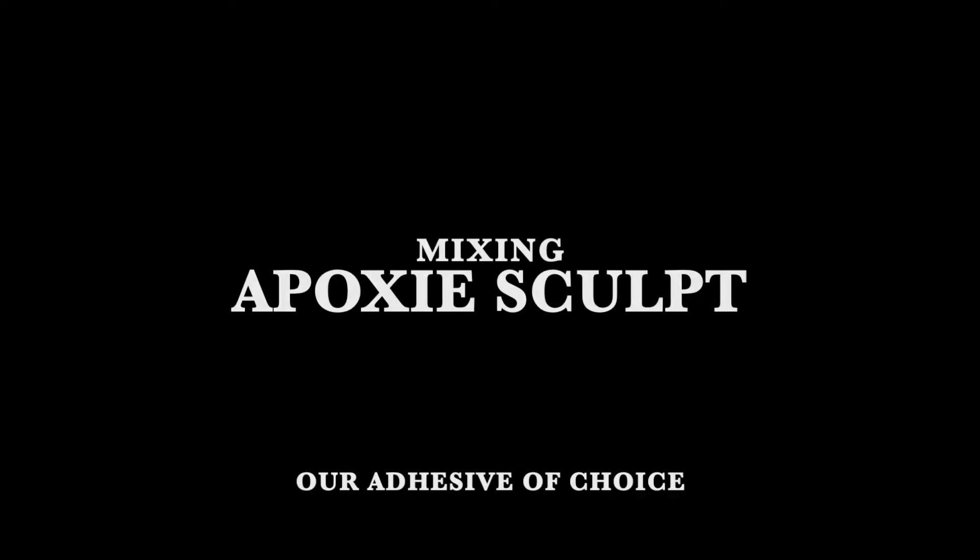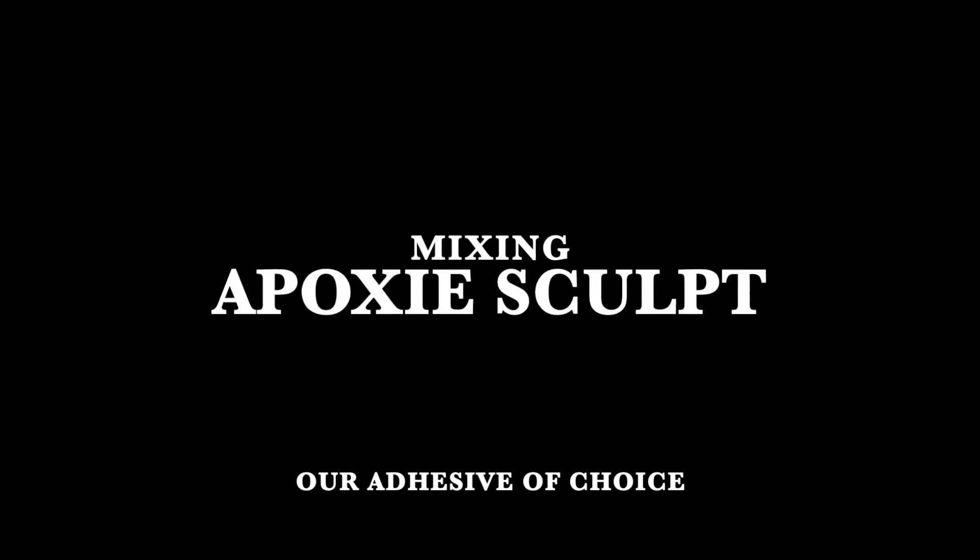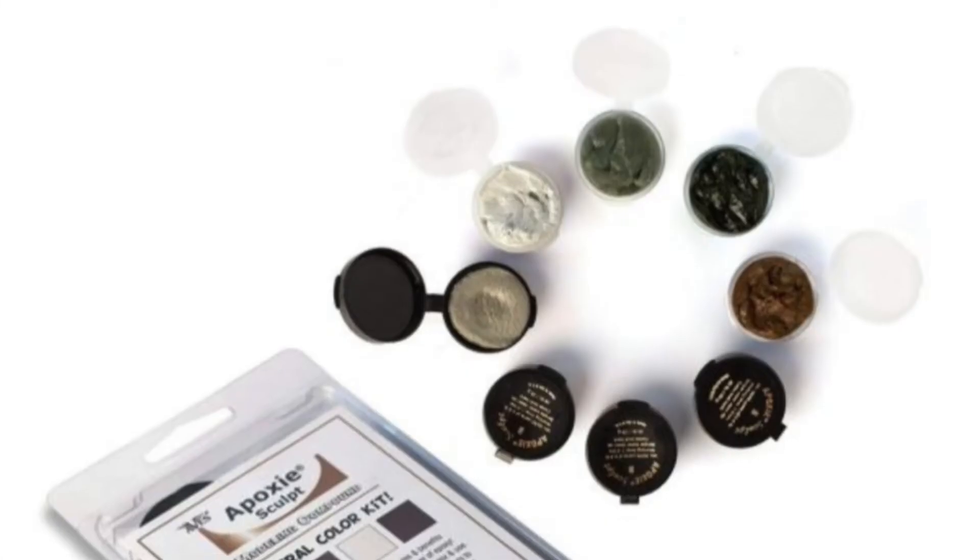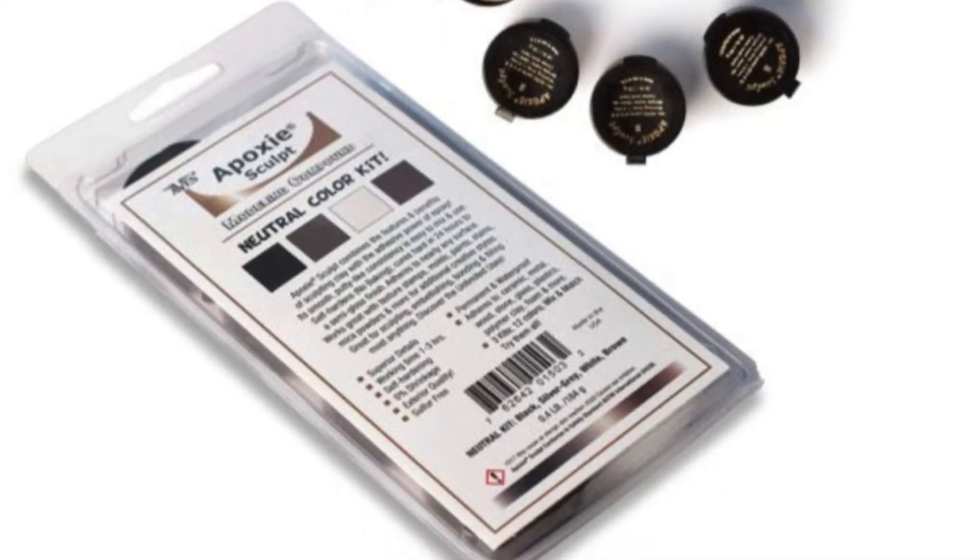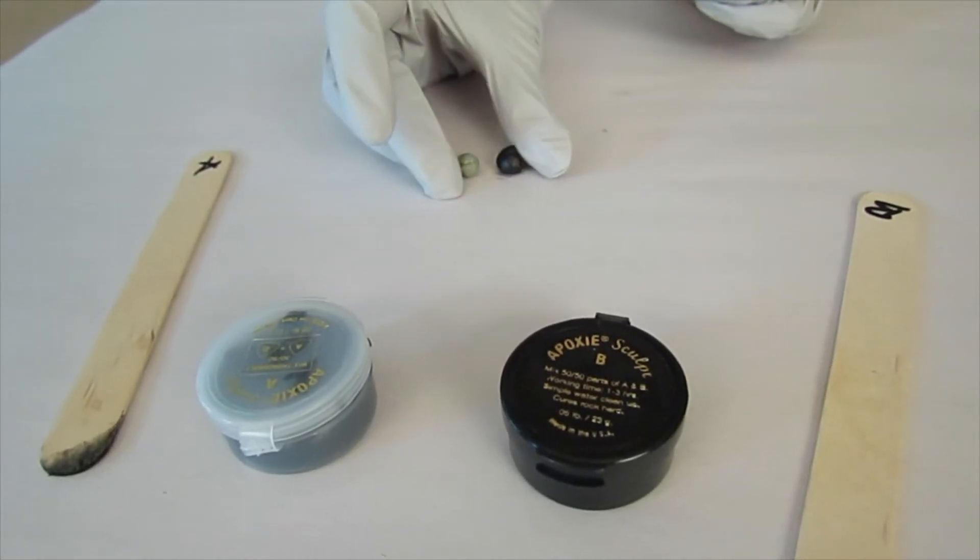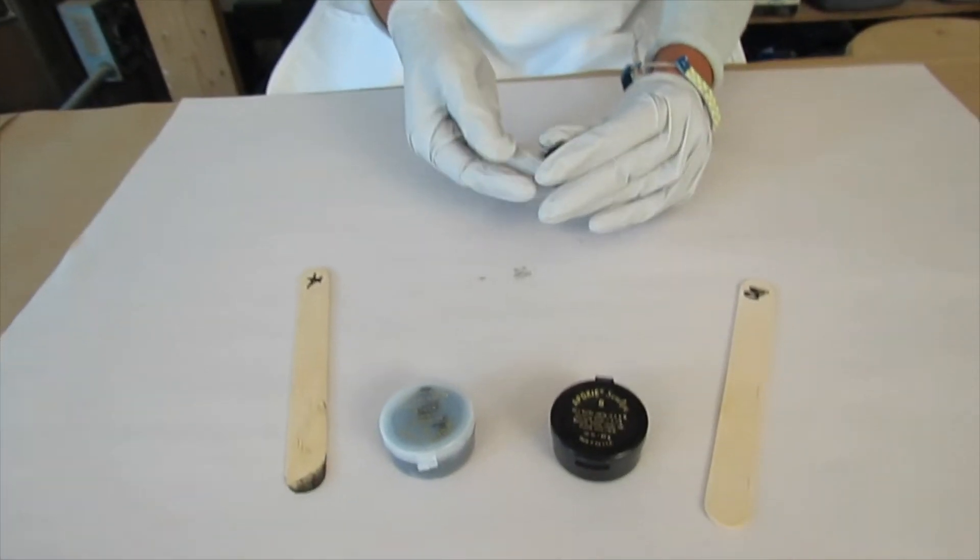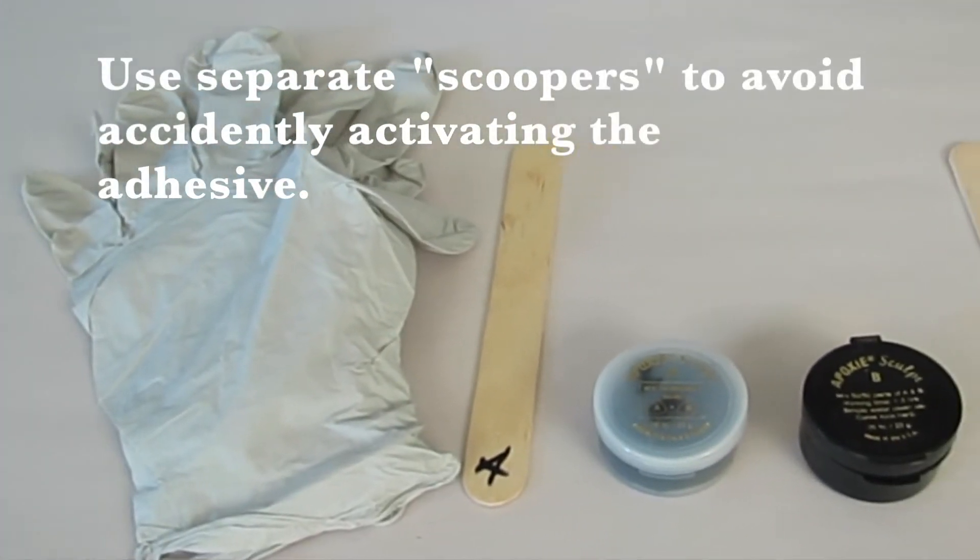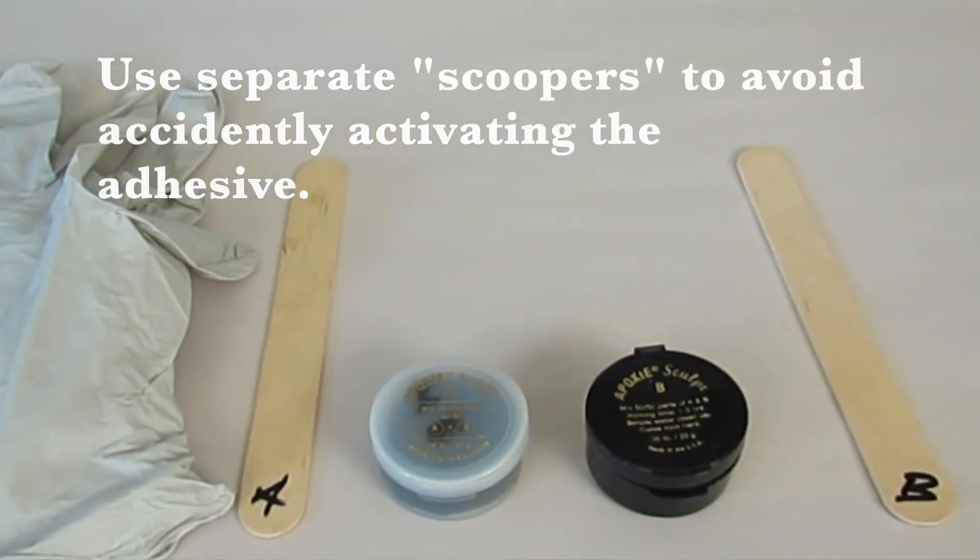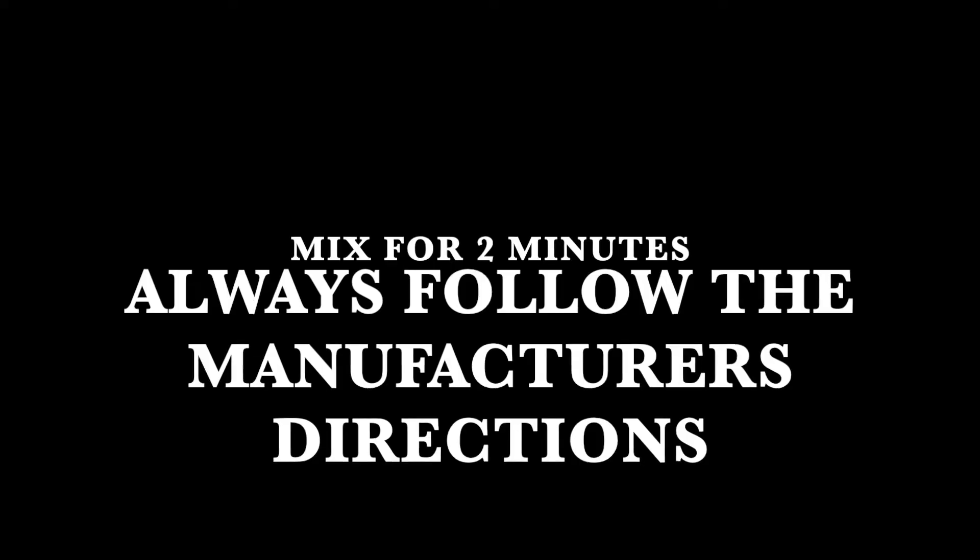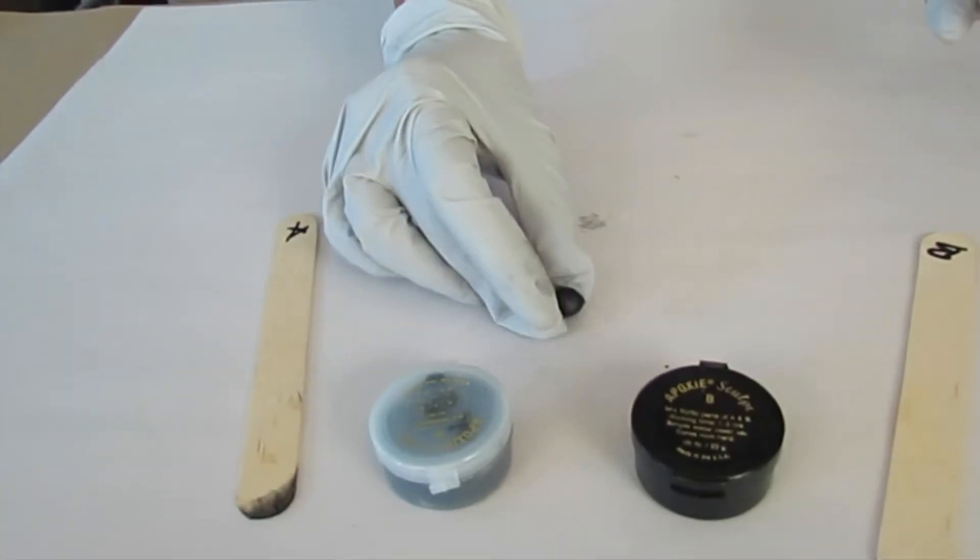For these projects, we are using epoxy sculpt, an air-drying, self-hardening adhesive. It is an odorless, two-part epoxy clay. Take equal amounts of the clay and knead together for two minutes. Wear gloves for mixing and do not contaminate the containers.